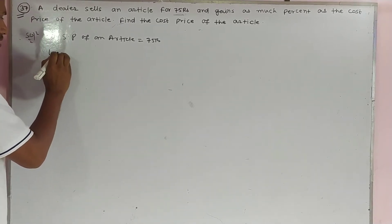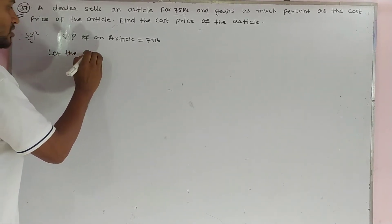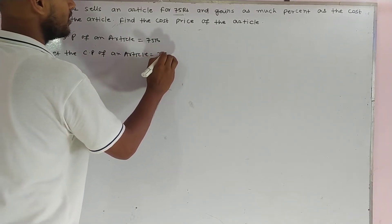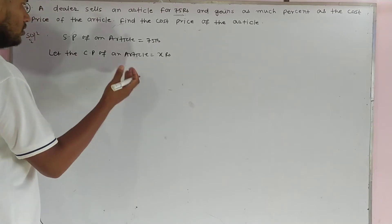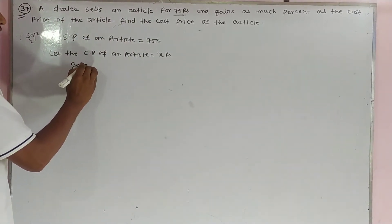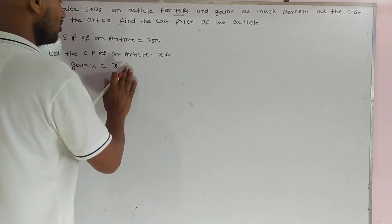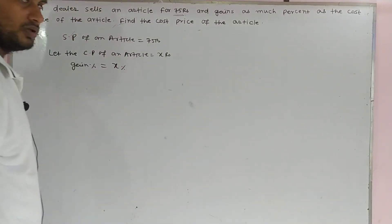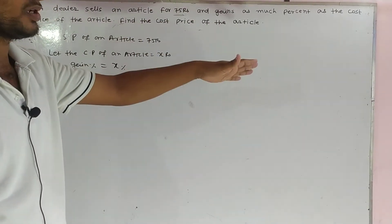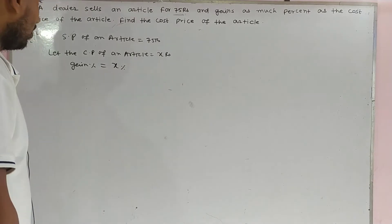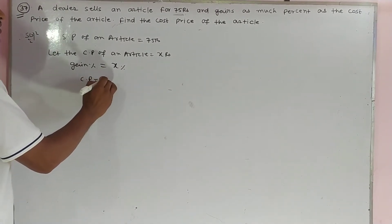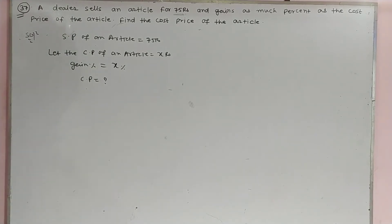So we are assuming here: let the CP of an article be equal to x rupees. So the gain percent will also be equal to x percent. Because the question states the gain is as much percentage as the cost price of an article. We have to find the CP of the article.